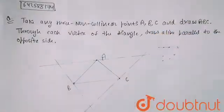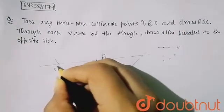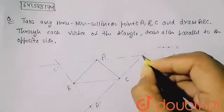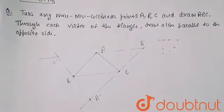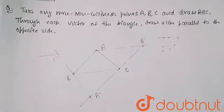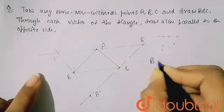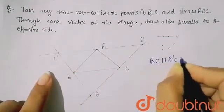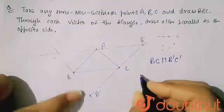At the intersection points, I can name them: this point as C dash, this point as A dash, and this point as B dash. So this will be my required figure. BC is parallel to B dash C dash.